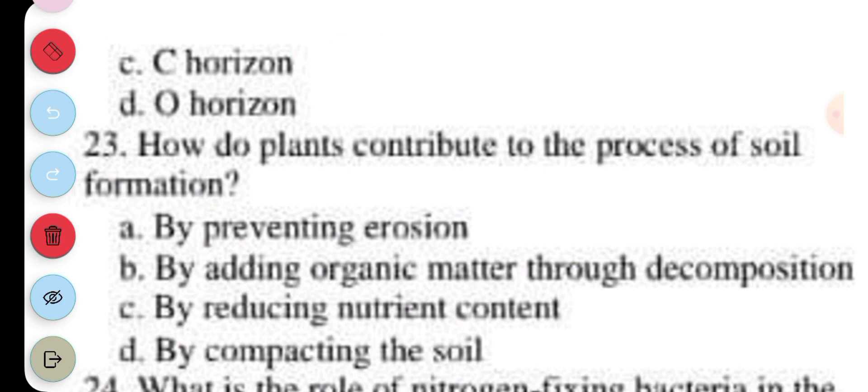Question 23. How do plants contribute to the process of soil formation? A. By preventing erosion, B. By adding organic matter through decomposition, C. By reducing nutrient content, D. By compacting the soil. The answer to question 23 is B. By adding organic matter through decomposition.